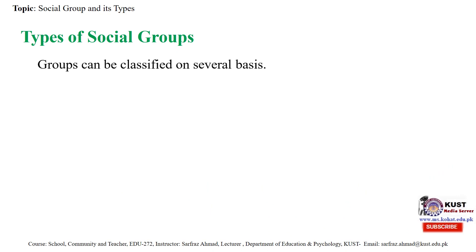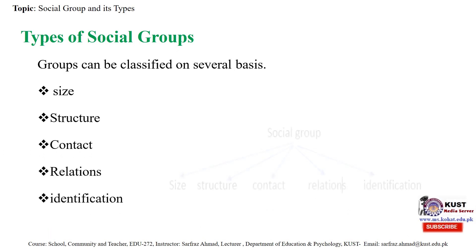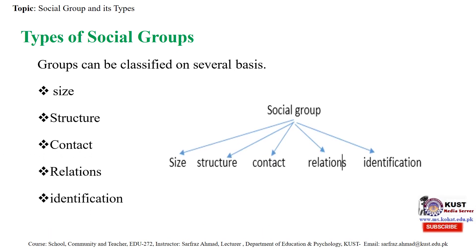Now, what are the types of social group? Groups can be classified on several bases: we can categorize social groups as per size, structure, contact, relations, and identification.